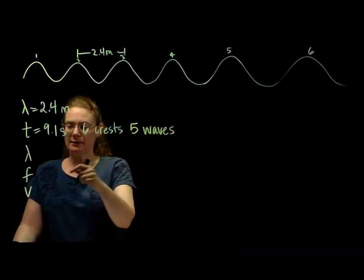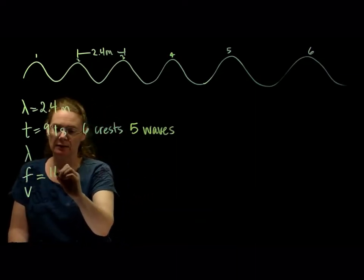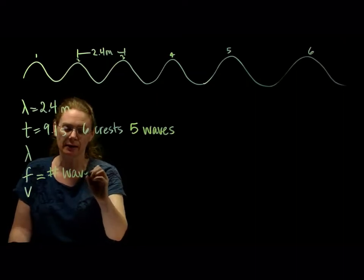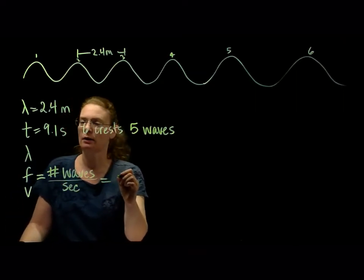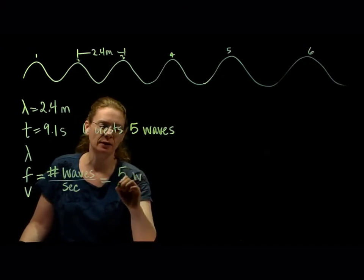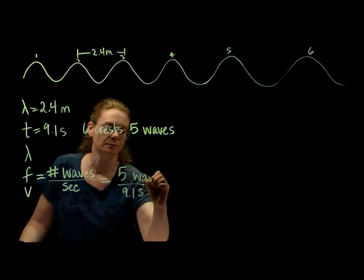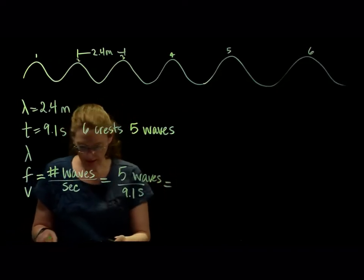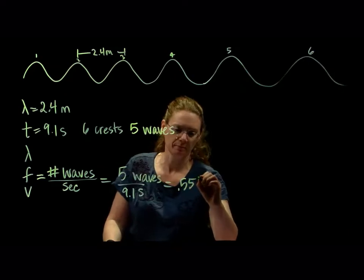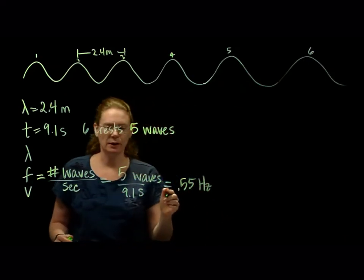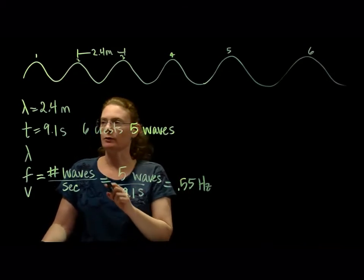That means we can figure out the frequency, because frequency is the number of waves per second. If we had 5 waves in 9.1 seconds, we can calculate the frequency: it's going to be about 0.55 hertz. So 5 waves took 9.1 seconds, and there's our frequency.